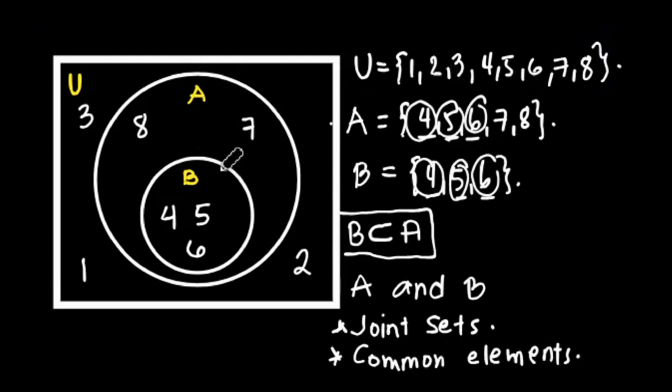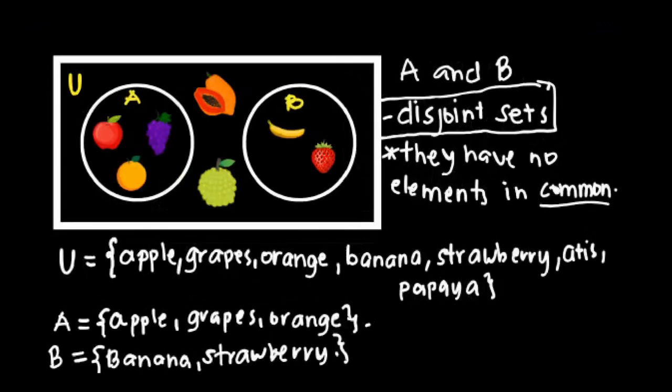You can see from the illustration that set B is inside set A. Automatically we know that set A includes these elements too. Same with set B. And these are the two types of sets in Venn diagram.